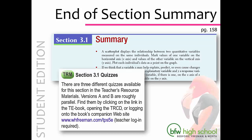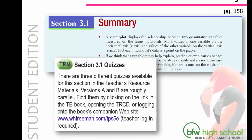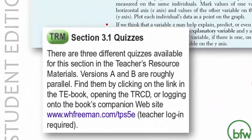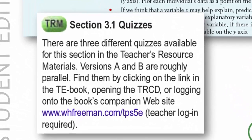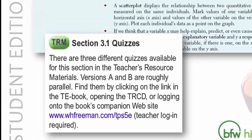At the end of each section, there is a summary which will provide a checklist for your students on what they have learned throughout the section. The Annotated Teacher's Edition calls out that there are three different quizzes available for each section. You can find them on your Teacher's Edition eBook, the Teacher Resource Flash Drive, or on the Book Companion site.